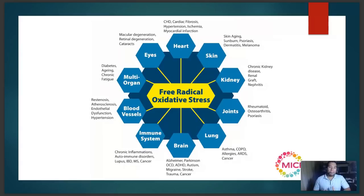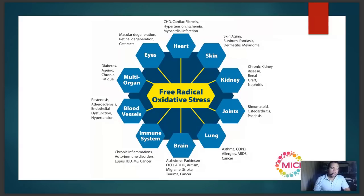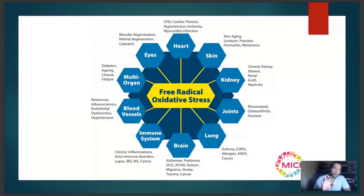Any cell that has mitochondria can end up with mitochondrial dysfunction and redox imbalance, leading to cellular damage, tissue damage, and eventually organ damage. All of these conditions have been shown to be significantly affected by free radical damage and redox imbalance. Cancer is one of the most widely studied areas, and the new view on cancer is that it's a mitochondrial metabolic disease.